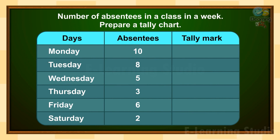Let's start. The first number is 10. For 10, we will draw 4 vertical lines: 1, 2, 3, 4, and then 1 slanting line for 5. Then again draw 4 vertical lines for 6, 7, 8, 9, and then make a slanting line for 10.